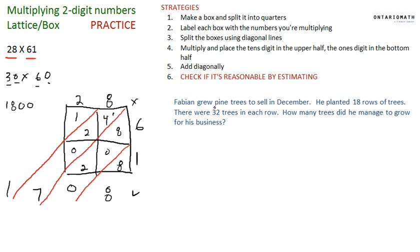I like to give a strategy when you have a word problem: replace the numbers that are given in the problem that are a bit larger with simple ones. So pretend he actually just had two rows of trees and there were three trees in each row.